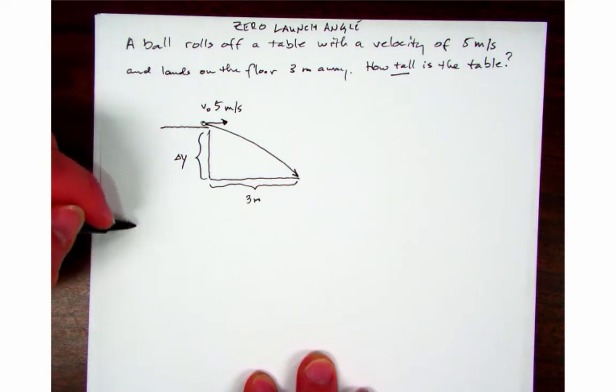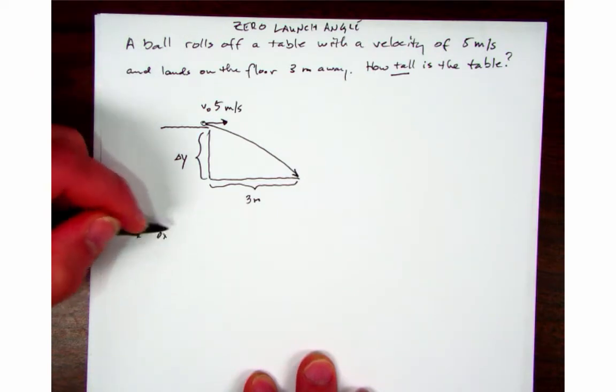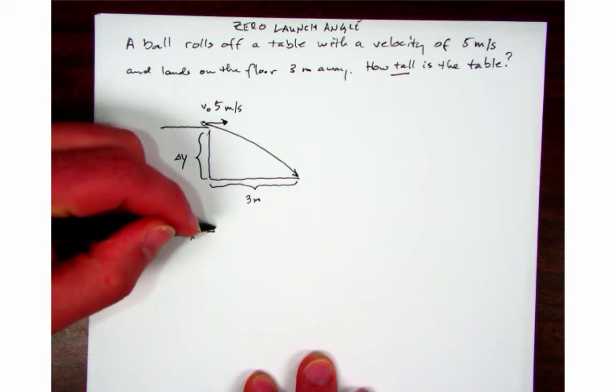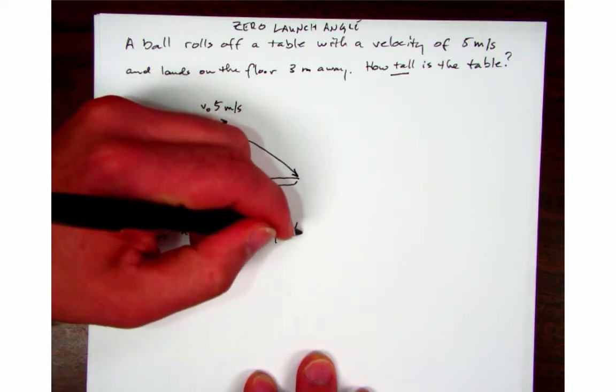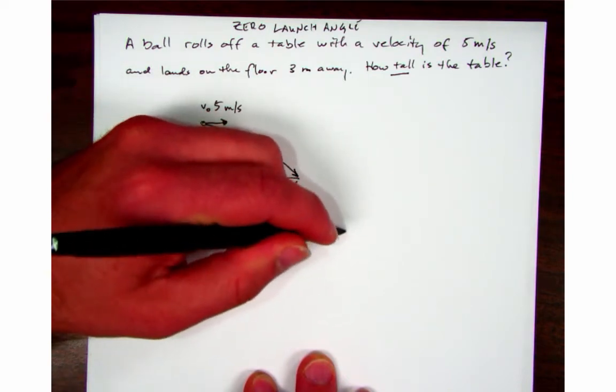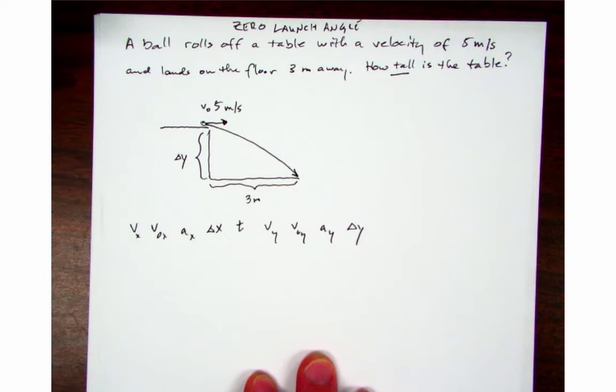So I've got v_x, v naught x, a_x, delta x, and t. And then I've got v_y, v naught y, a_y, and delta y. I also have the four equations that I typically use.